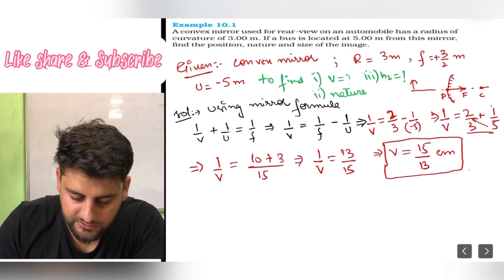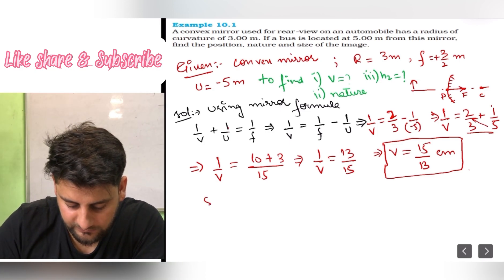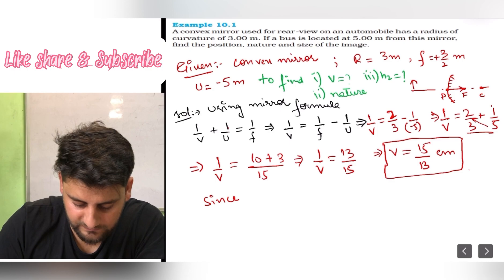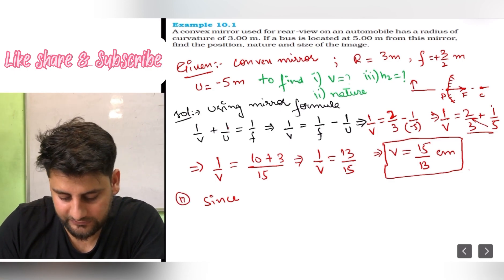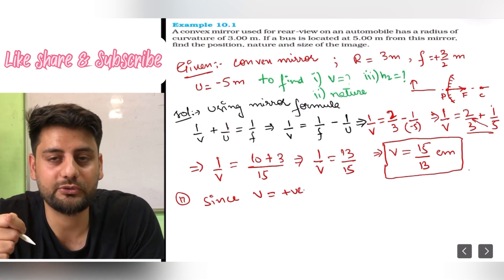Keep in mind it is positive, or I can say v is equal to 15 upon 13 centimeters. So this is my v, that is approximately 1 point something. Now let's talk about nature. Since v is positive, since v is positive.